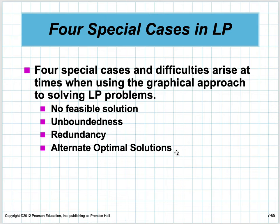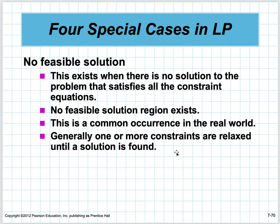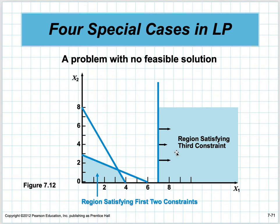There are four special cases of linear programs. First, no feasible solution: when the constraints produce regions that don't intersect, the feasible region is the empty set, and there's no solution. For example, if two constraints limit a region but a third requires values greater than what those allow, the intersection is empty.